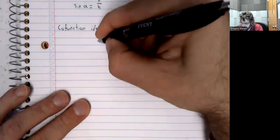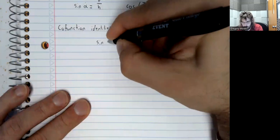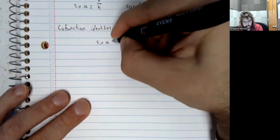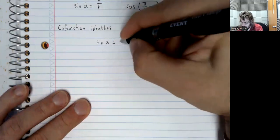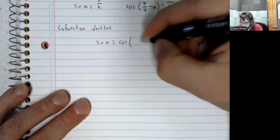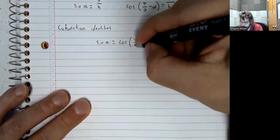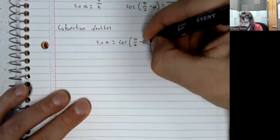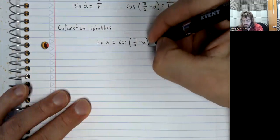That the sine of alpha is the same as the cosine of pi over 2 minus alpha.